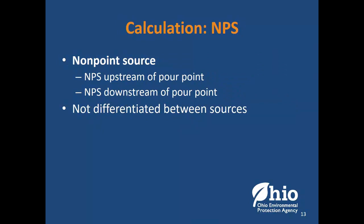The non-point source is what we balance to — that's what everything ends up at. The important point is we don't differentiate between sources. When we say in some watersheds it's 80% non-point source, we're not saying it's 80% ag or 80% developed — we're saying 80% non-point source. We can't differentiate that with this method. Background is included in this; it's generally considered pretty low. In the Muskingum watershed, we may be able to do some interpretation of what the background might be.